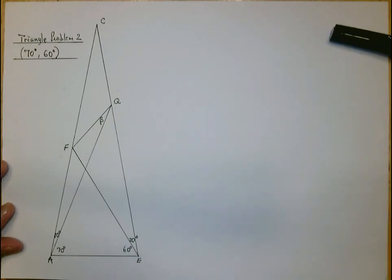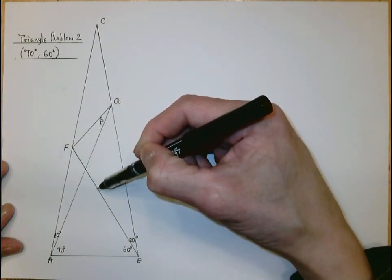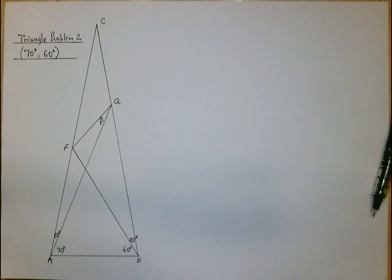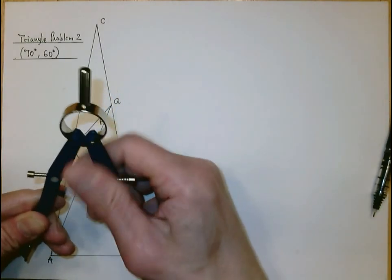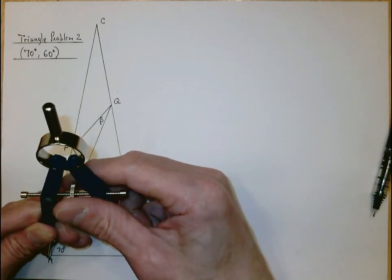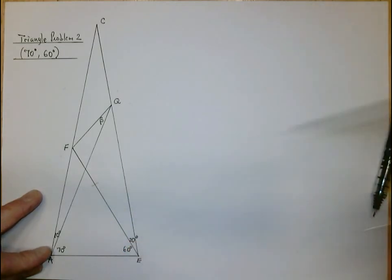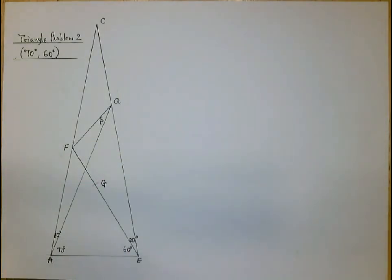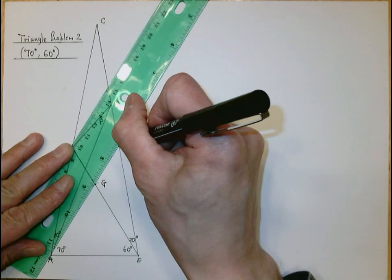The first thing we would like to do is find a point G on FE such that GE will be congruent to AE, and that is not difficult to do. I'm going to measure segment EA and locate the point G, and then I'm going to connect AG to produce a segment inside the triangle.